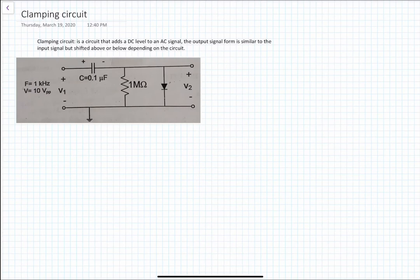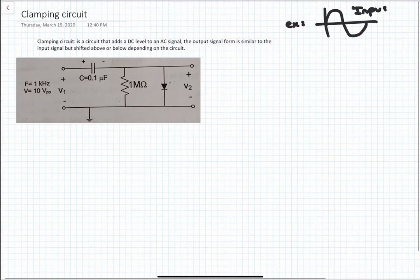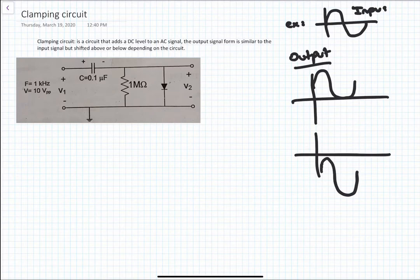Hello everybody. Today we are going to explain the clamping circuit. A clamping circuit is a circuit that adds a DC level to an AC signal. The output signal waveform is similar to the input signal but shifted above or below depending on the circuit.